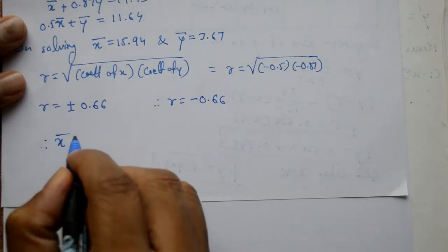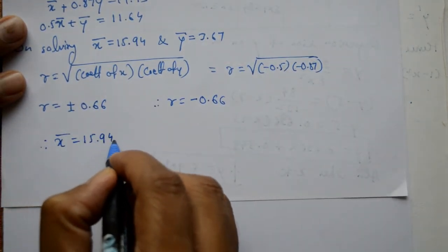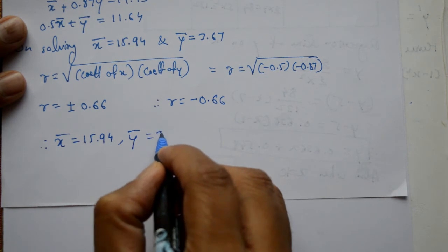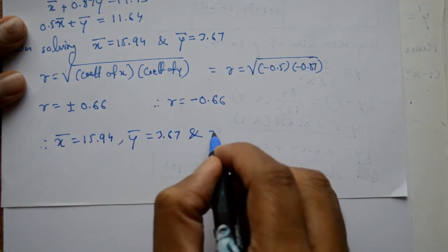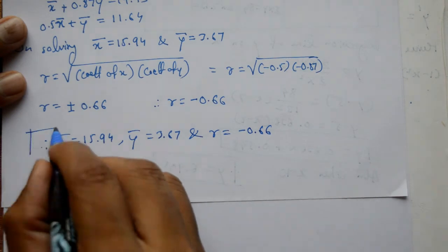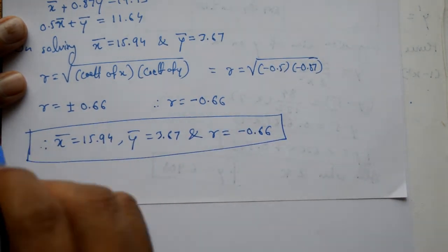Now therefore, x bar is 15.94 and y bar is 3.67 and r is equal to minus 0.66. This is required x bar, y bar and coefficient of correlation.